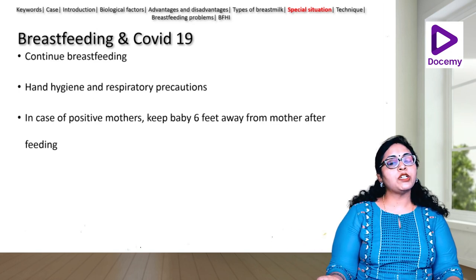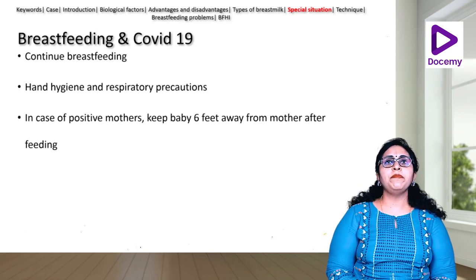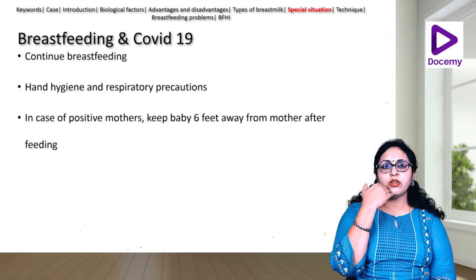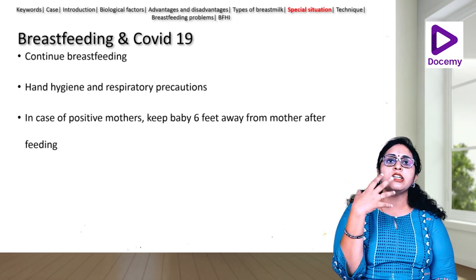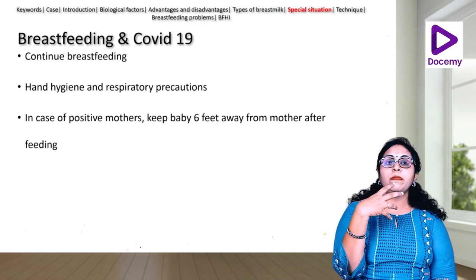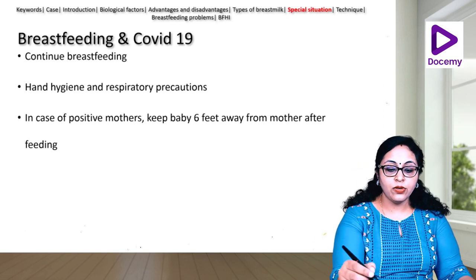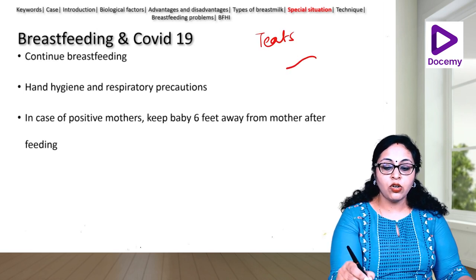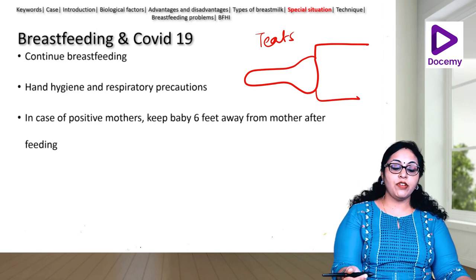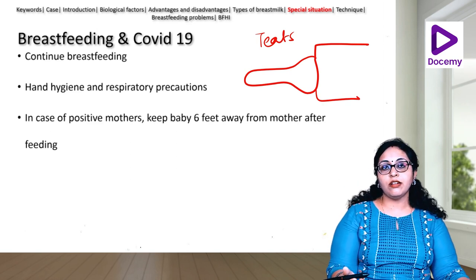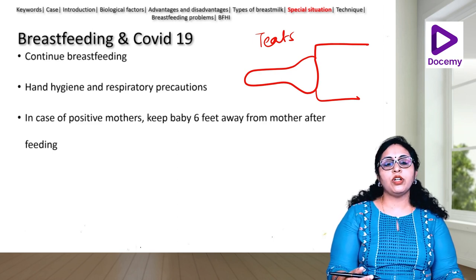For babies with cleft lip and palate, breastfeeding is difficult because the seal cannot be created. The approach is to use a deeper latch — pushing more breast tissue inside so it seals the cleft gap. Only if that is not possible should you go for bottle feeding, using special long teats designed for cleft palate babies, though these are costly.